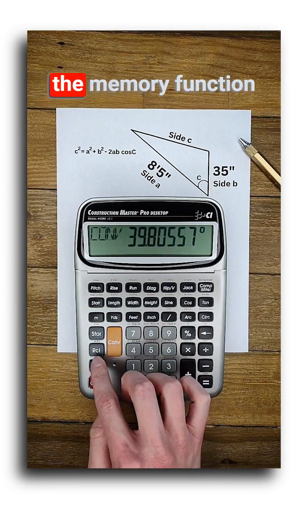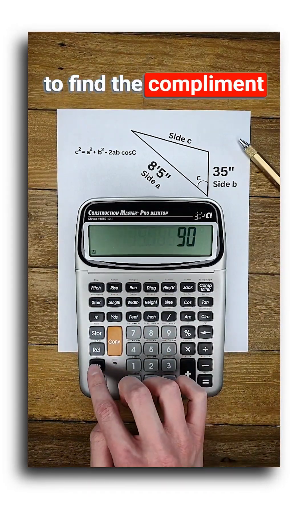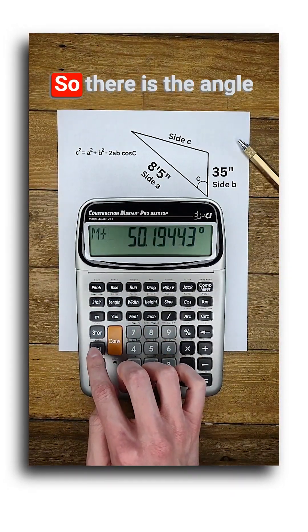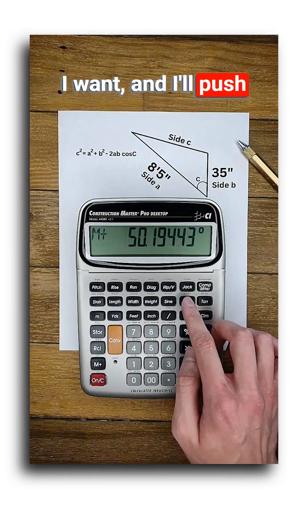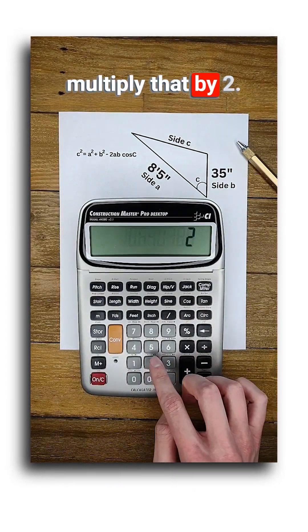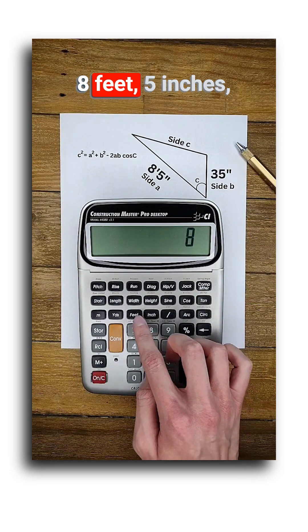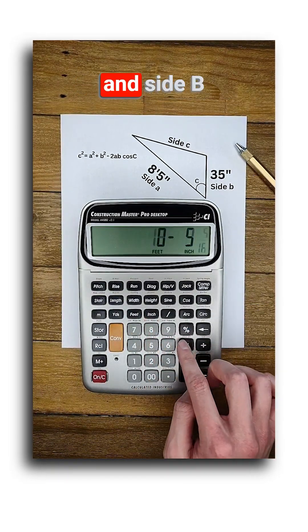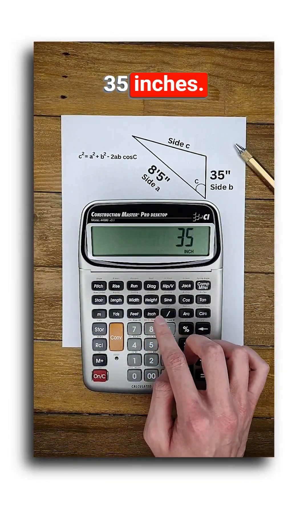Now I'm just going to use the memory function to find the complement of that angle. So there's the angle I want and I'll push cosine and multiply that by 2, then by side A, 8 feet 5 inches, and side B, 35 inches.